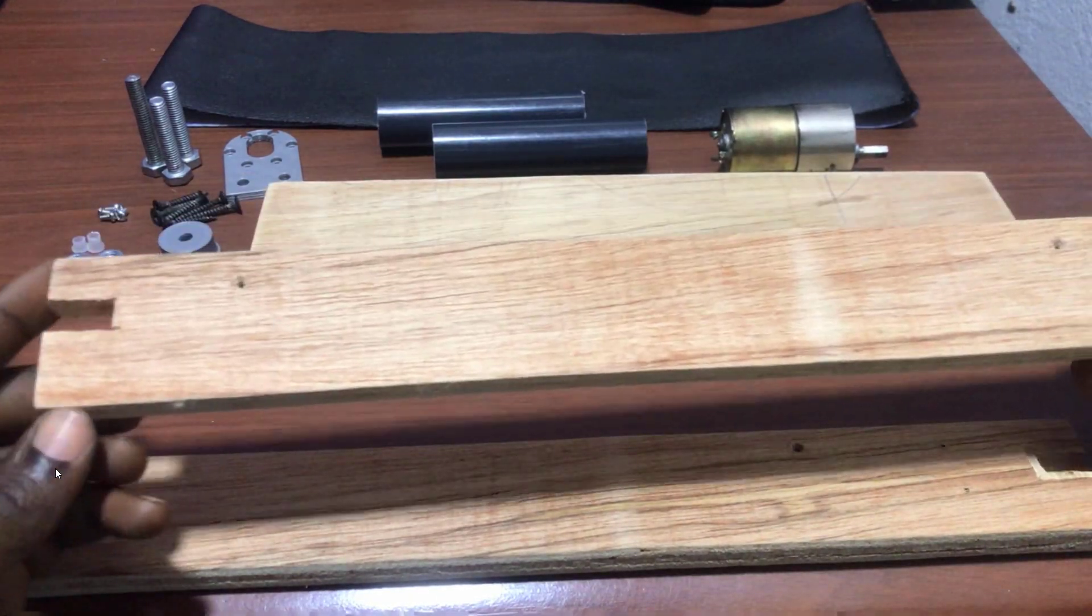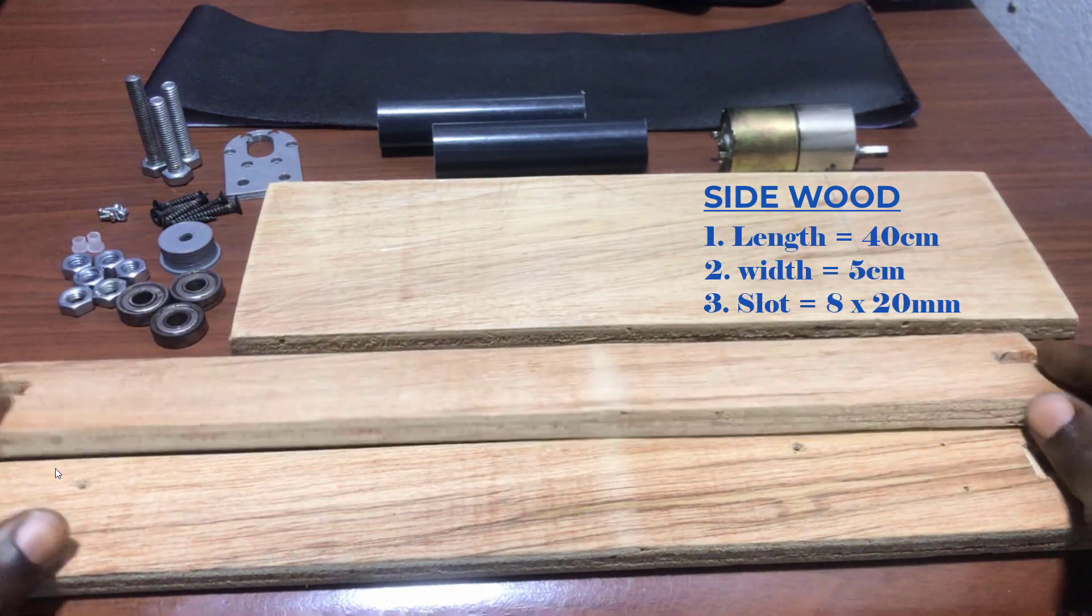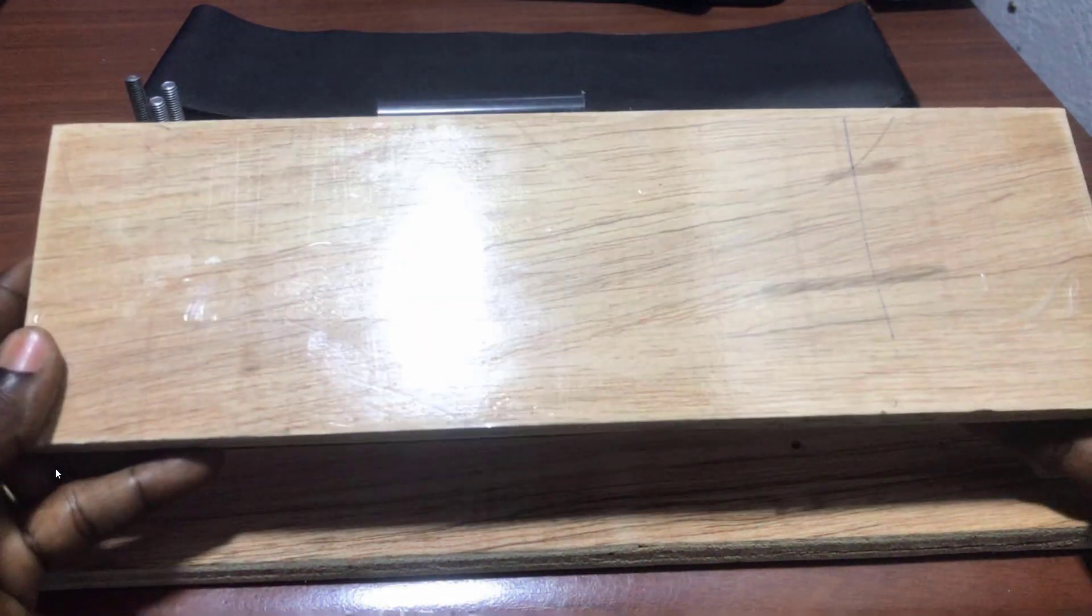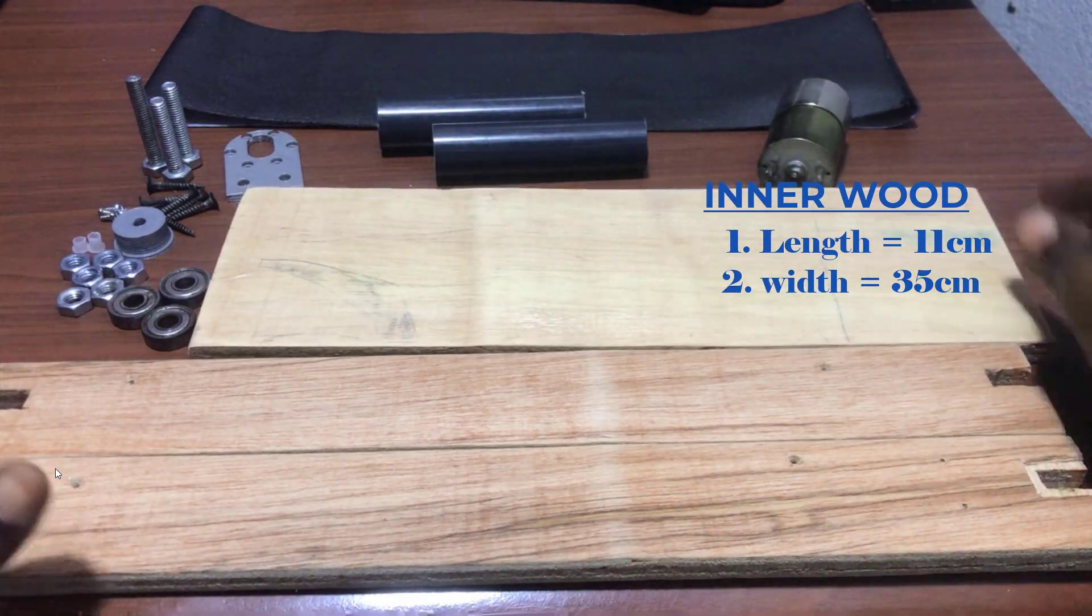So these are the items we will need. We will need this plywood that will form the sides of the conveyor belt. We will need an inner board to support the conveyor.